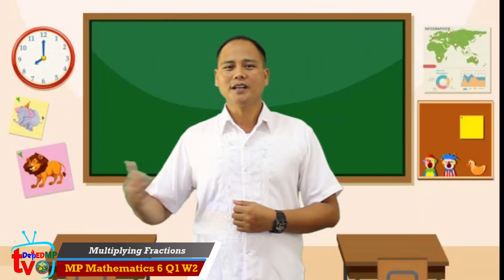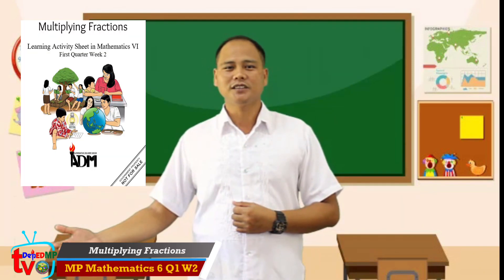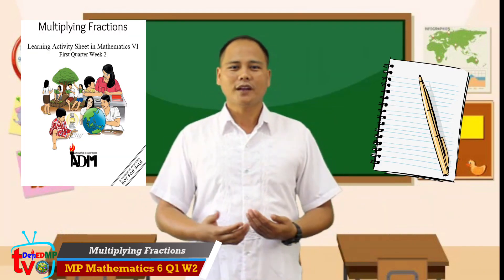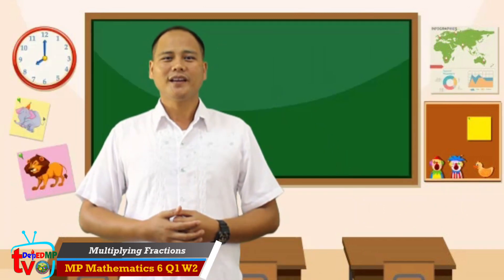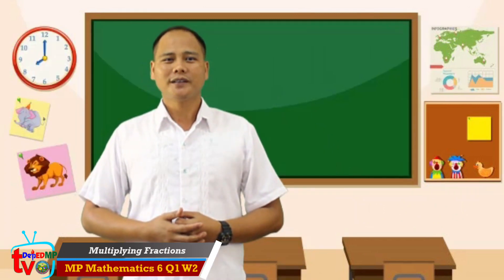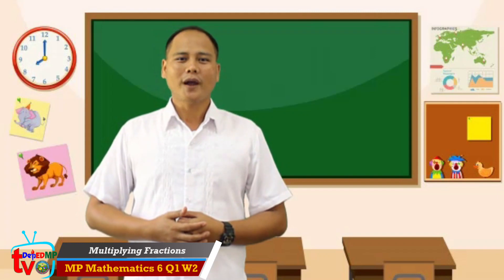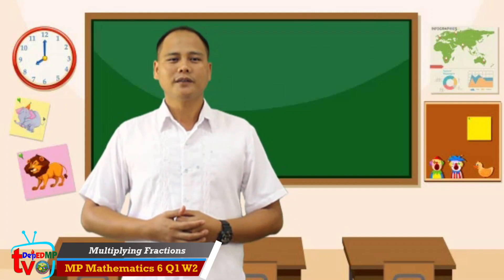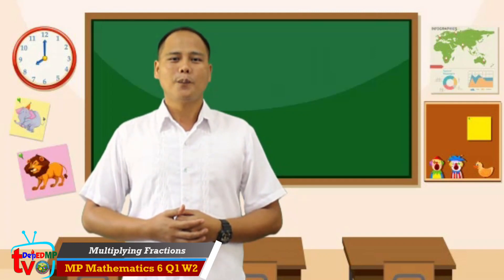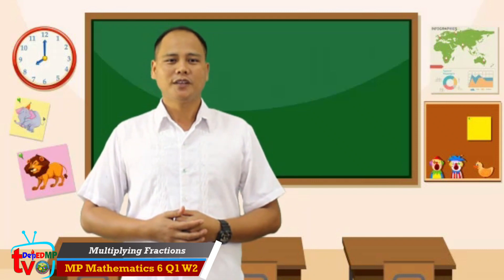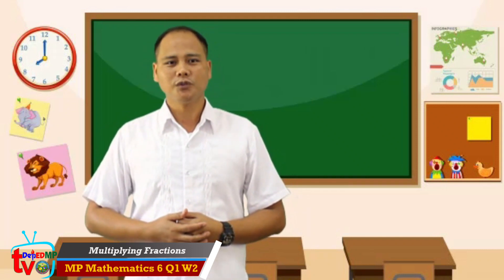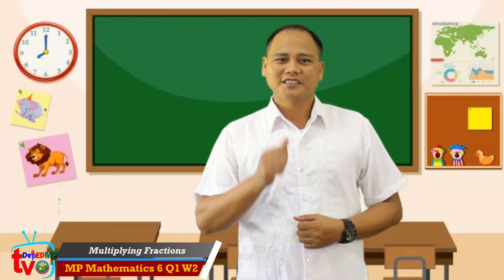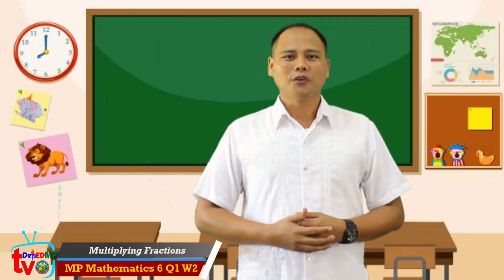Be ready with your learning activity sheets and ball pen so we can now start. You are cooking pancakes with your mother. She asks you to add twice the measurement of the 1 and 1/2 tablespoon of baking powder. Can you tell how much baking powder you are going to use? Let's learn how as we go on.